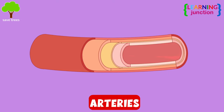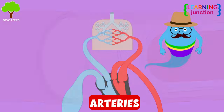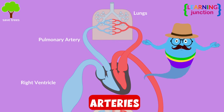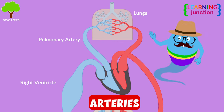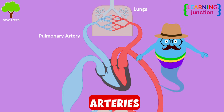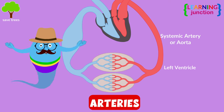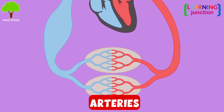Arteries transport oxygen-rich blood away from the heart to where it needs to go. Pulmonary arteries carry blood that has a low oxygen content from the right ventricle to the lungs. Systemic arteries carry oxygenated blood from the left ventricle to the tissues of the body.